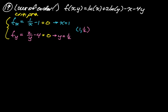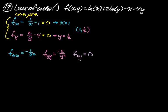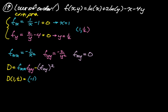We need partial xx, partial yy, and partial xy. Partial xx = -1/x². Partial yy = -2/y². For partial xy: partial x has no y in it, so its derivative with respect to y is 0, and similarly partial y has no x, so partial yx = 0. D = (partial xx)(partial yy) - (partial xy)². Plugging in (1, 1/2): partial xx = -1, partial yy = -8, and we subtract 0. So D = 8, which is greater than 0.